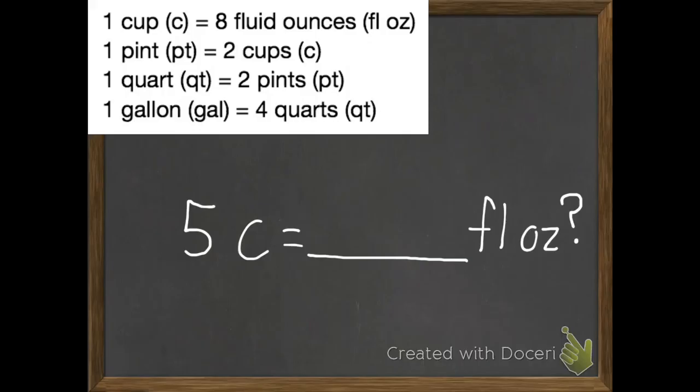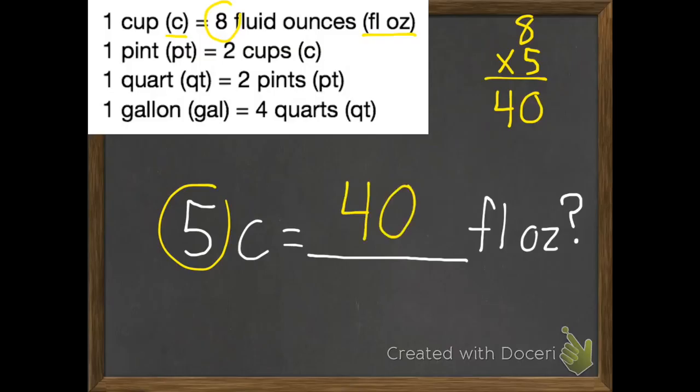Okay, so if I have five cups, how many fluid ounces do I have? So the basic fact we need is this top one, cups and fluid ounces. And we need to multiply eight times five. Eight times five is forty. So five cups equals forty fluid ounces.